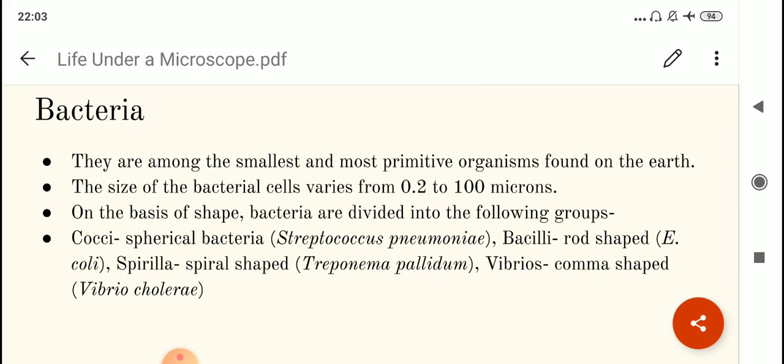Now bacteria may have different shapes and on the basis of different shape, they have been given different names. The first is cocci. Cocci means these bacterial cells will be spherical in shape. Example of a cocci bacteria is Streptococcus pneumoniae. By the name, you can easily tell that this bacteria is responsible for causing pneumonia. And in the genus name you see, cocci is there. So you can easily make out that this is a spherical bacteria.